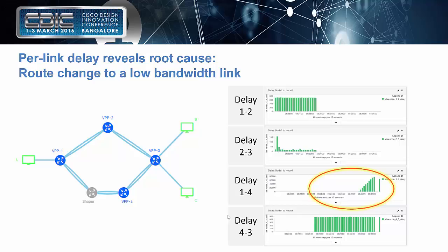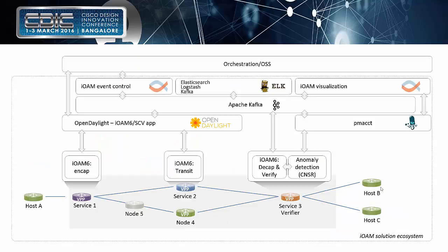We can also demonstrate this live. In a demo setup with a Kibana dashboard, you export the timestamp and delay information and see the delays on the upper links, then the switchover happening, and then on the lower links you see the delay ramping up — filling the buffer — and then suddenly packet drops appear. The concept can be translated into reality and visualized in a live dashboard ecosystem.